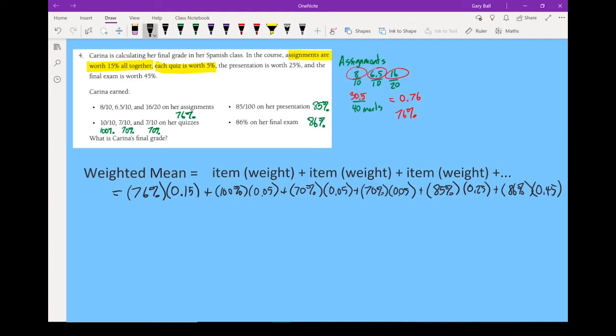If I were to label what each of these is, this is the assignments. This one right here is quiz number one. This is quiz two. This is quiz three. This is the presentation. This last one right here is the final exam.